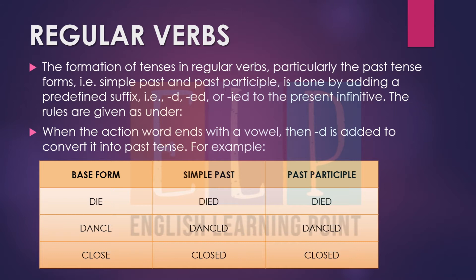For example: die → died, died; dance → danced, danced; close → closed, closed. The end of these words is a vowel — E, A, I, O, U — these are all vowel words. When the verb ends with a vowel, we make the second and third form — the past form or past participle form — by putting only D.